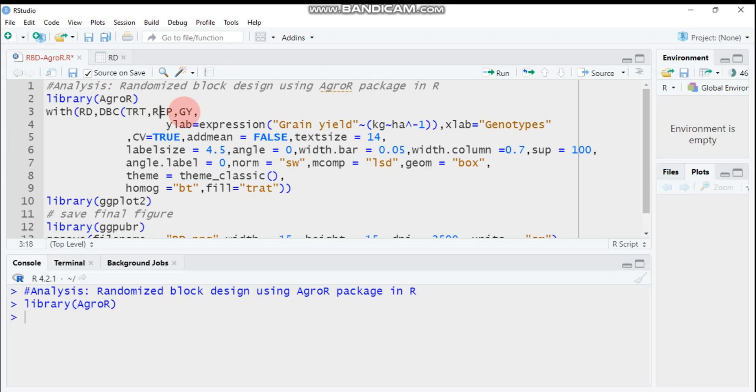Column that contains the block of replication, column that contains the response variable. Then if you want to write the x-axis and y-axis title, you have to use a function YLAB and XLAB respectively. In fact, my treatment is genotype, so I assigned genotype and grain yield which is in the form of kilogram per hectare for the y-axis.